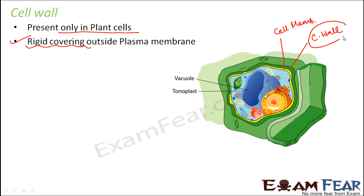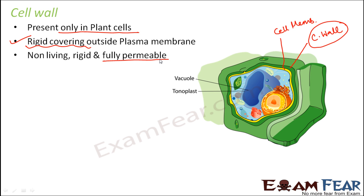Now talking about this cell wall — it is non-living, rigid, and fully permeable. Cell wall is fully permeable, meaning it fully allows the passage of particles across it. It doesn't filter which particles are allowed or not — it just allows everything. That is why there is a cell membrane inside, because even though the cell wall allows all particles, if a particle should not be allowed to enter, it will be stopped by the cell membrane.